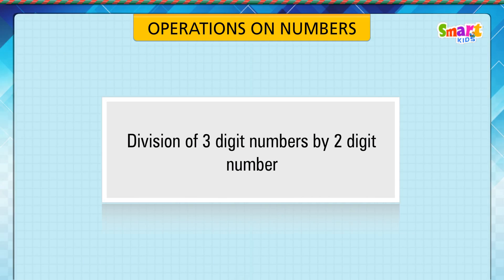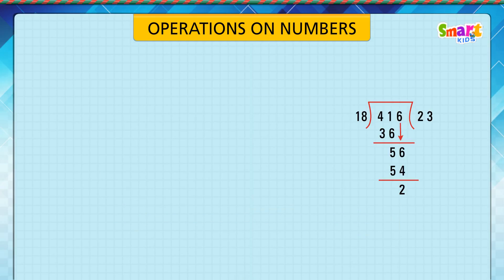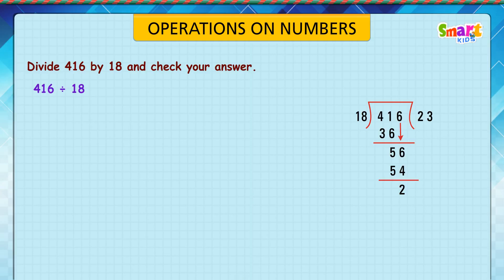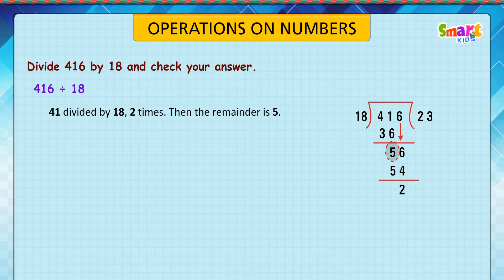Division of three-digit numbers by a two-digit number. Look at the problem: divide 416 by 18 and check your answer. 416 divided by 18: 41 divided by 18 is 2 times, then the remainder is 5. 56 divided by 18 is 3 times, then the remainder is 2.